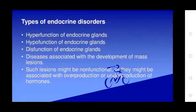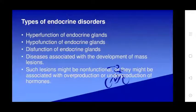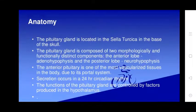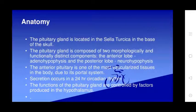Types of endocrine disorders include hyper-functions of endocrine glands, hypo-functions of endocrine glands, and dysfunctions of endocrine glands. Disease may also be associated with development of mass lesions; such lesions might be non-functioning or they might be associated with overproduction or underproduction of hormones. Disorders involving the pituitary glands are discussed first.